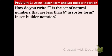Example 1, and this is in the top right corner of your note sheet. How do you write t is a set of natural numbers that are less than 6 in roster form, and how do you write in set-builder? So let's do roster first.